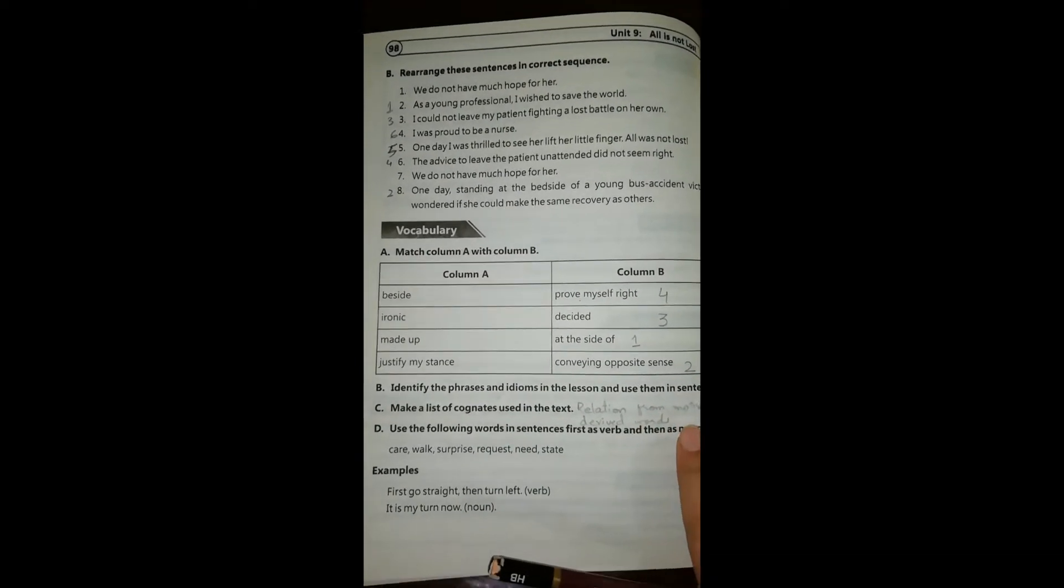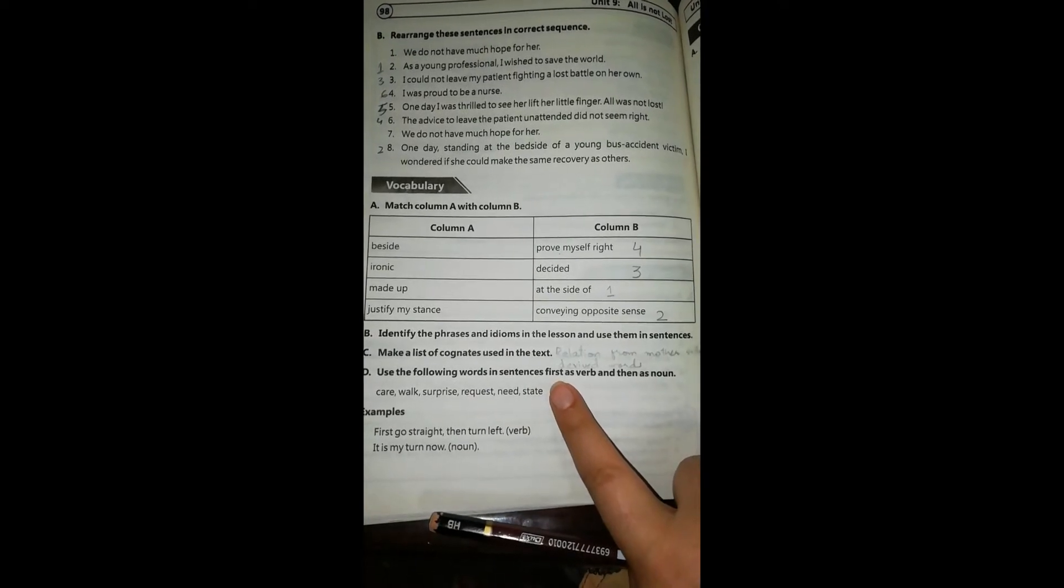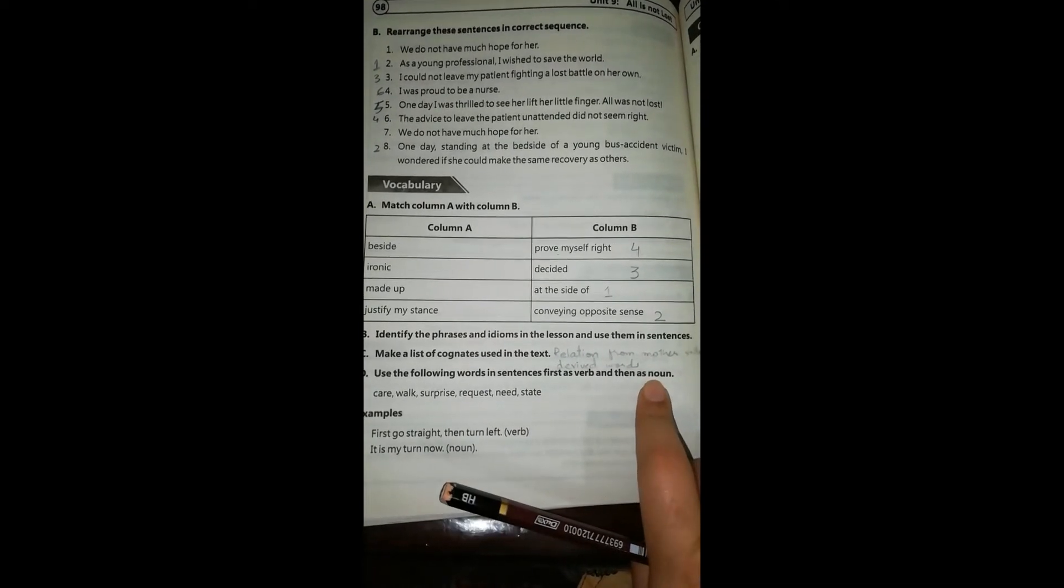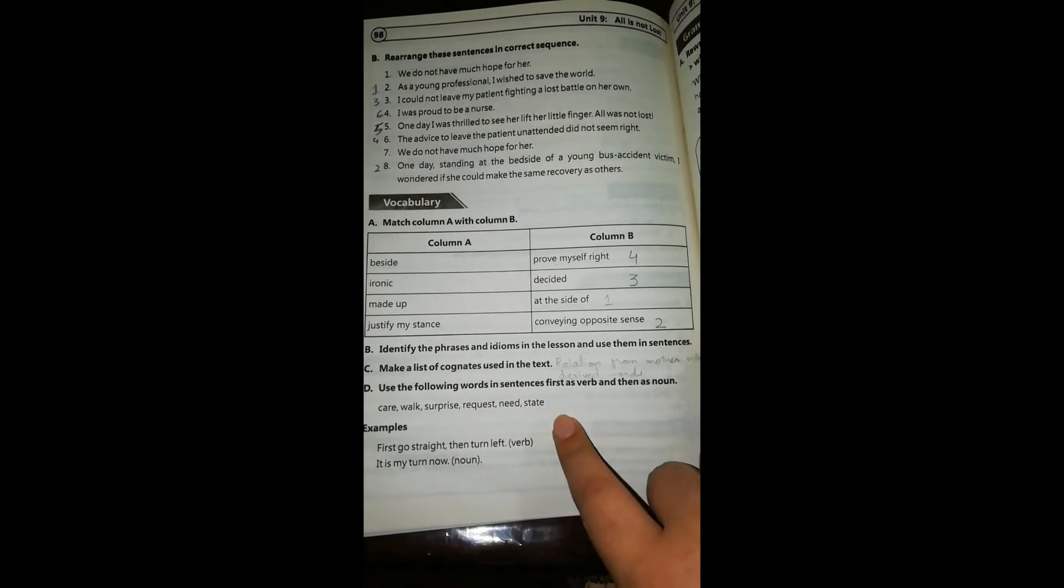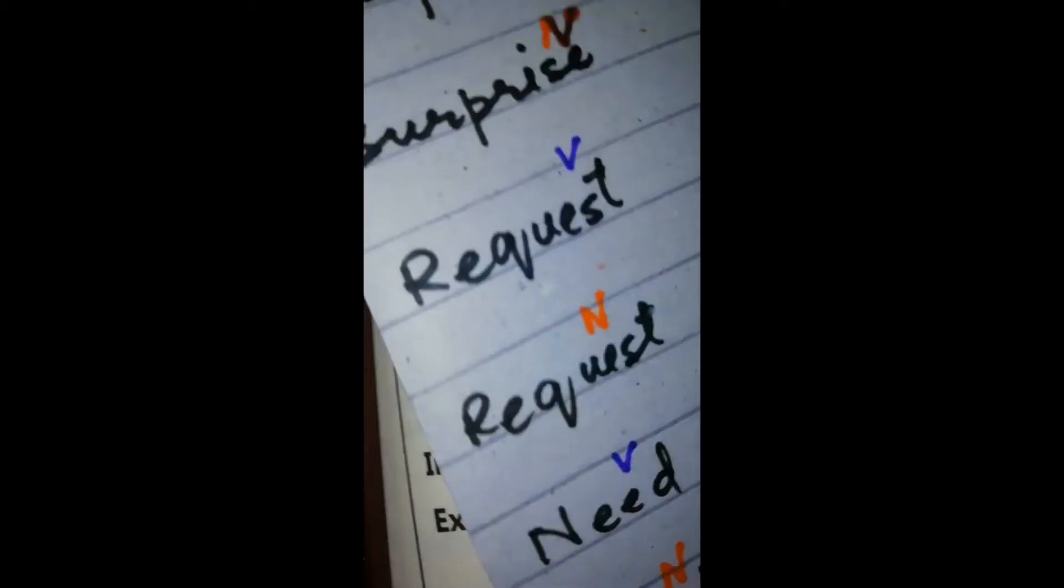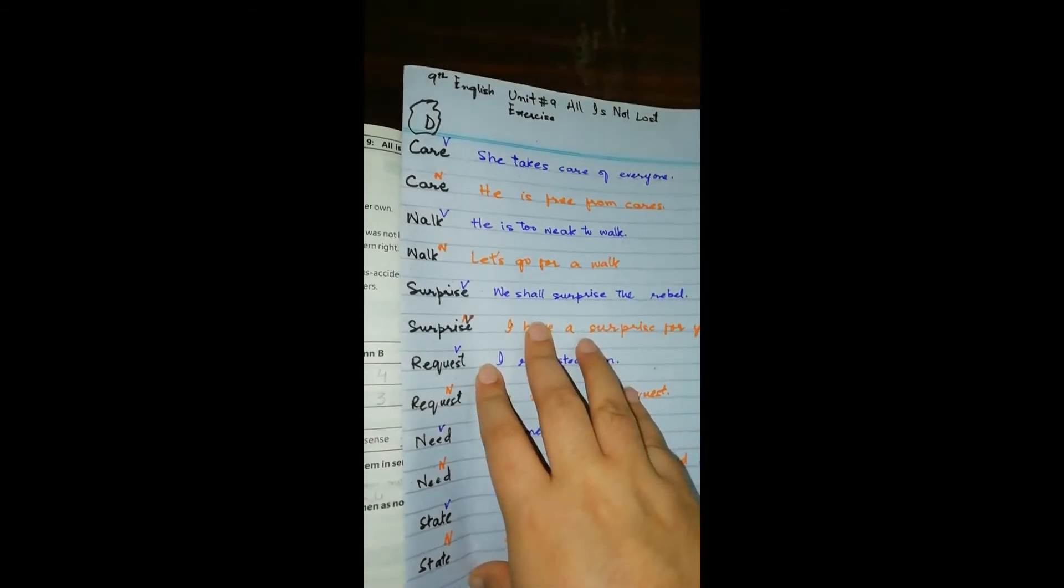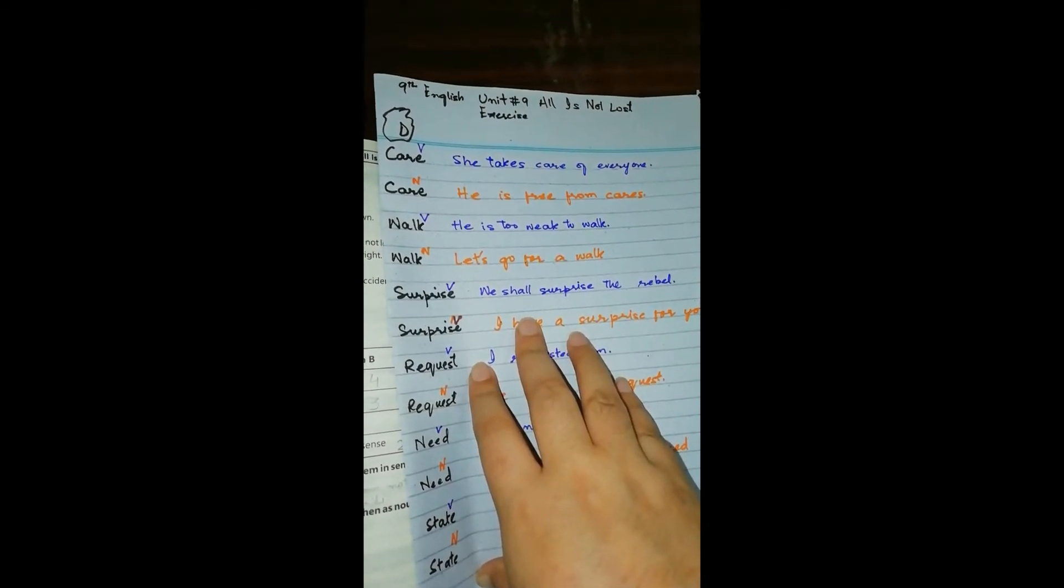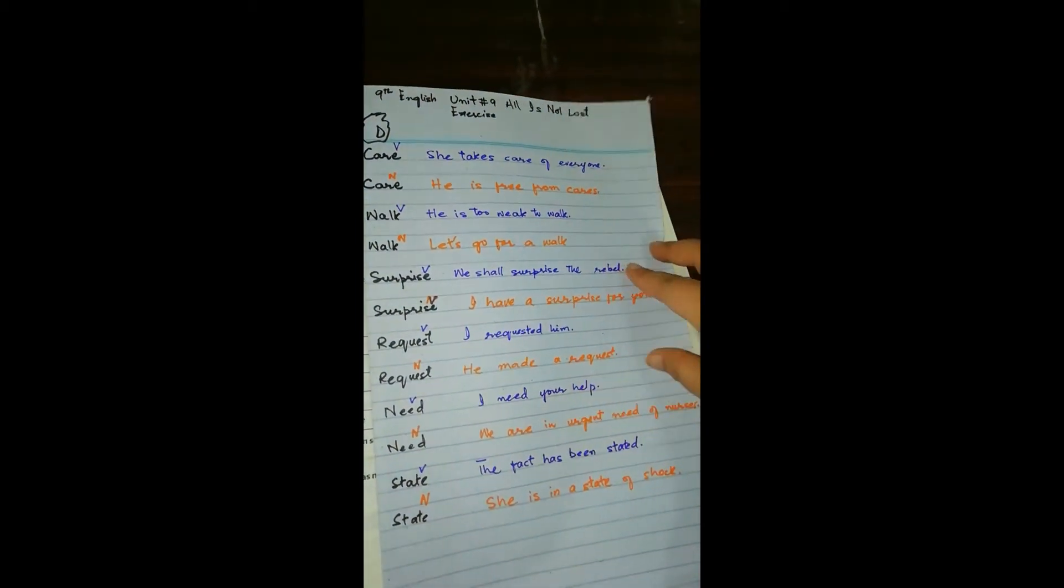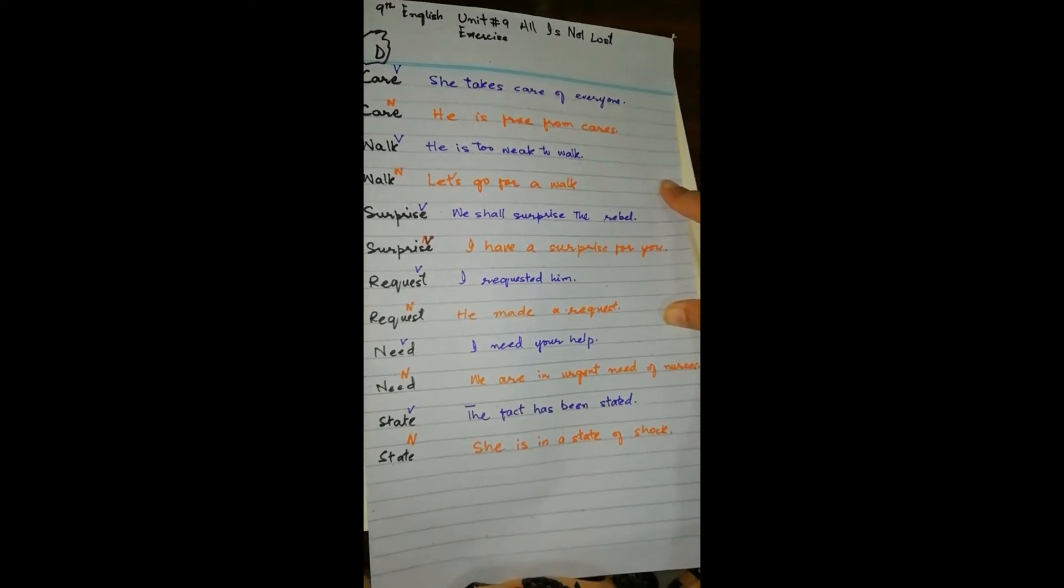Then we have to use the following words in sentences, first as a verb and then as a noun, like care, walk, surprise, request, need, and state. I have made their sentences here for your assistance. See care as a verb: she takes care of everyone. Care as a noun: he is free from cares. You can see all of these. I hope that you can see them clearly. Taking screenshots would help you.